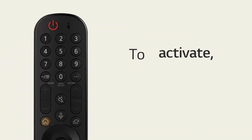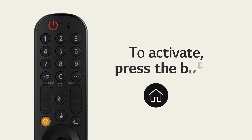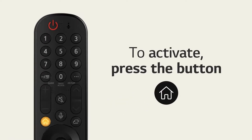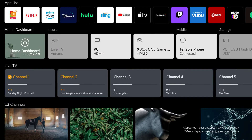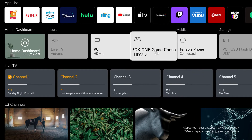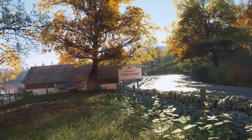After connecting your game console to the TV, go to the 2021 new home. You can find the game console option in the home dashboard. This is your gaming shortcut.